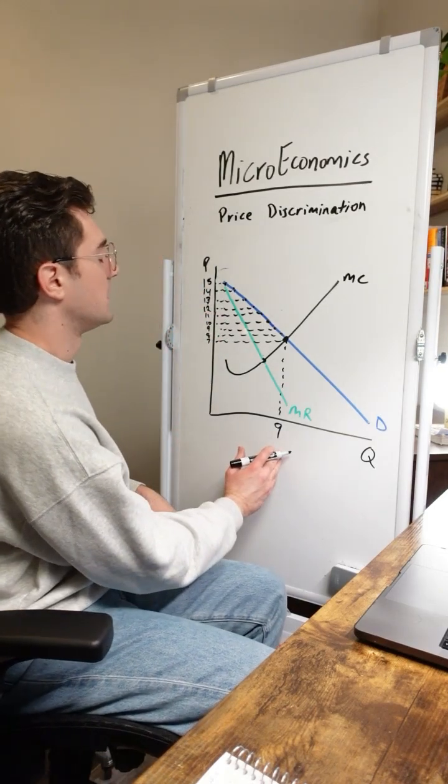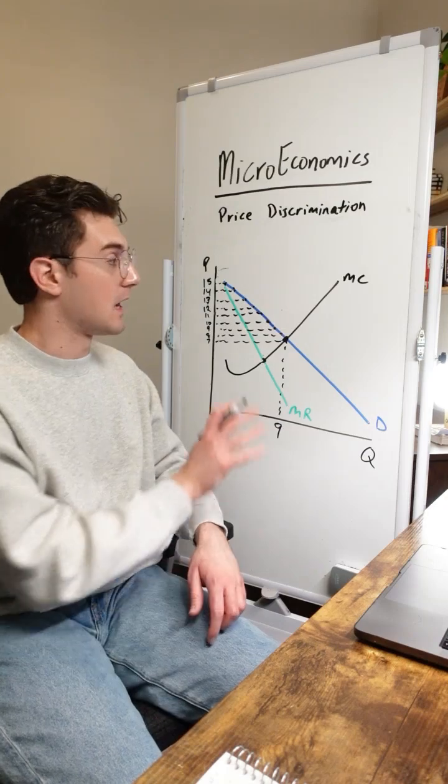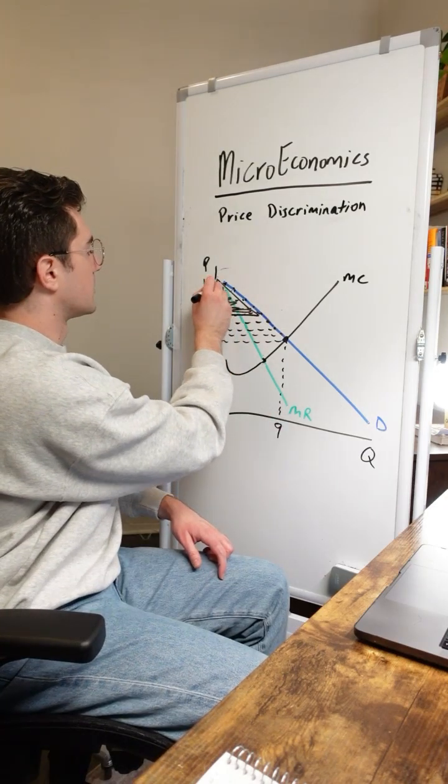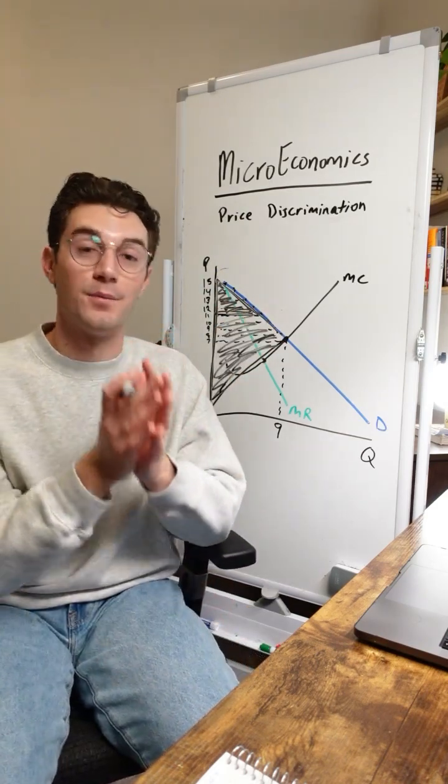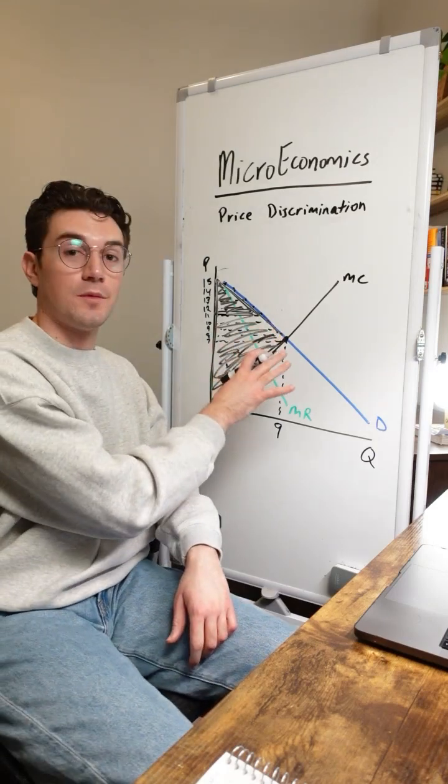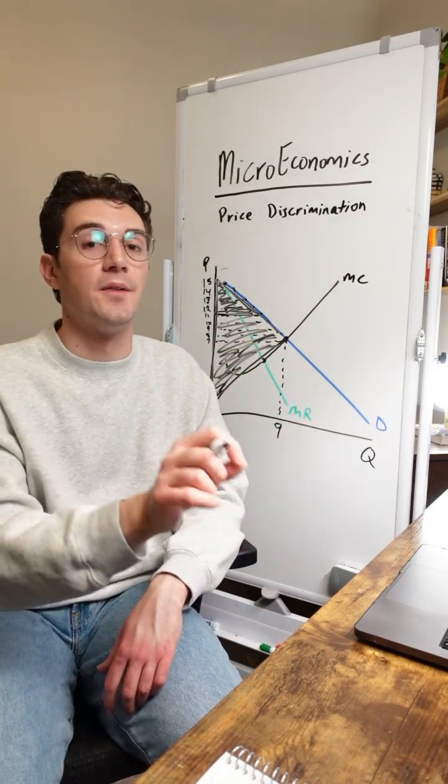The reason they're going to push beyond their MR equals MC point is because they can squeeze all of the profit out of the consumers in this market. It's not like consumers have this little triangle of consumer surplus anymore. Producers have literally taken the whole pie because they can perfectly charge each consumer their exact willingness to pay. No consumer is getting a deal here because the monopoly is dynamically setting price dependent on the consumer.